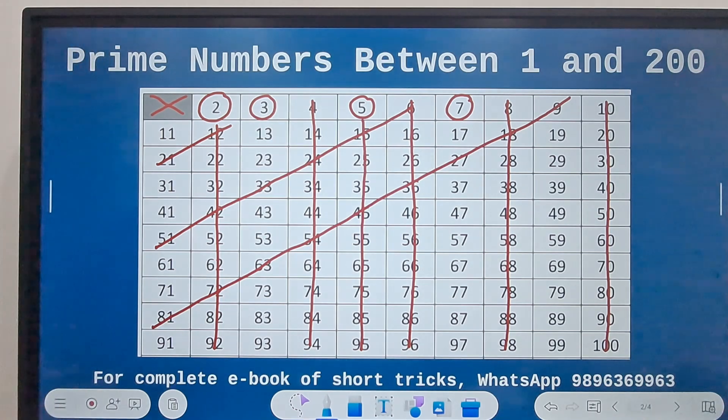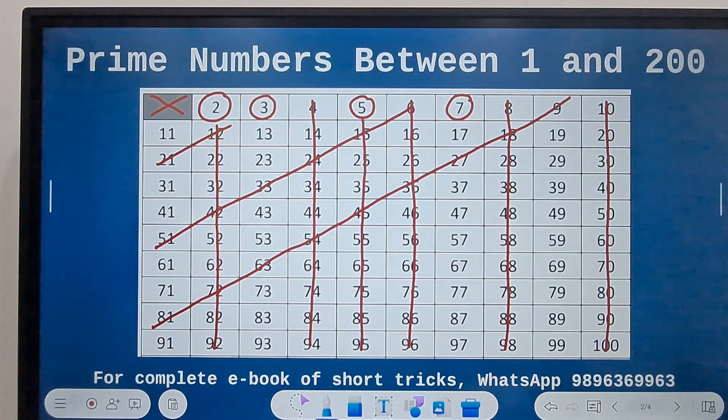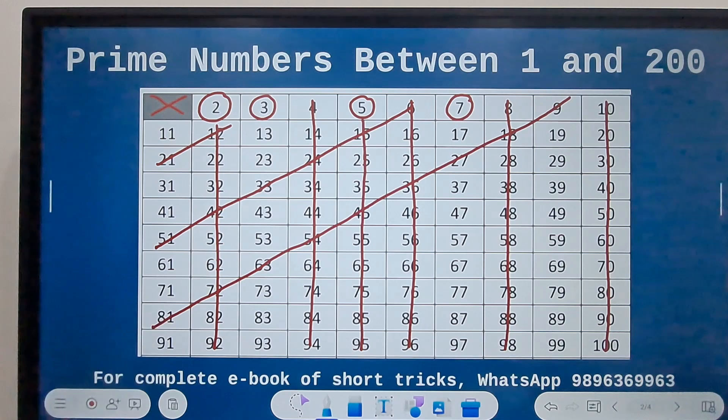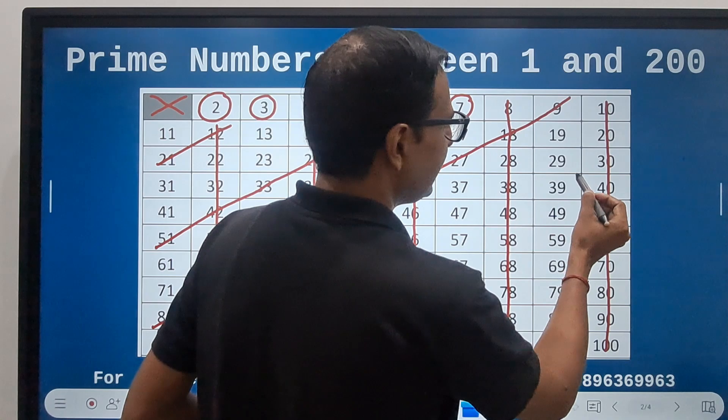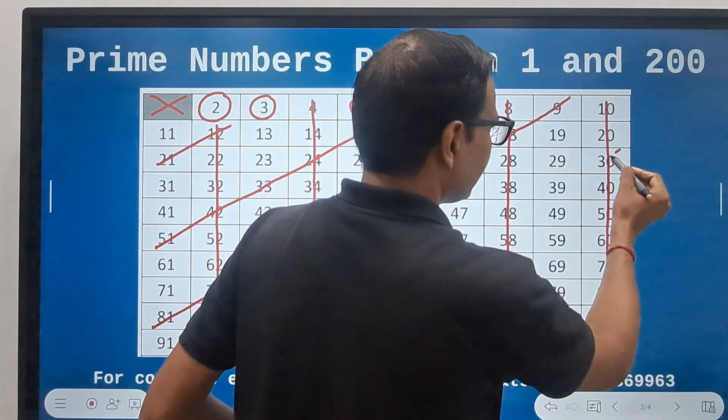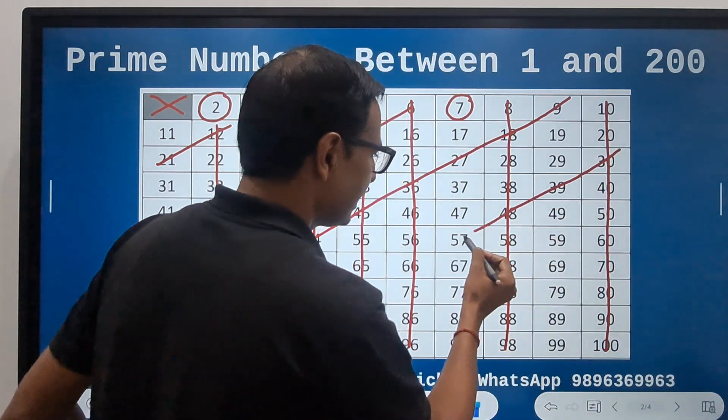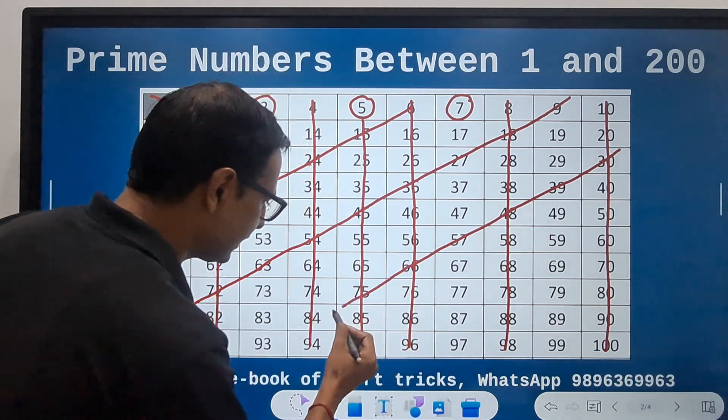And likewise you may go for some other numbers also which still are there, like the number 39 which is divisible by 3. So from 30 onwards, all these which lie along this diagonal are also ruled out.